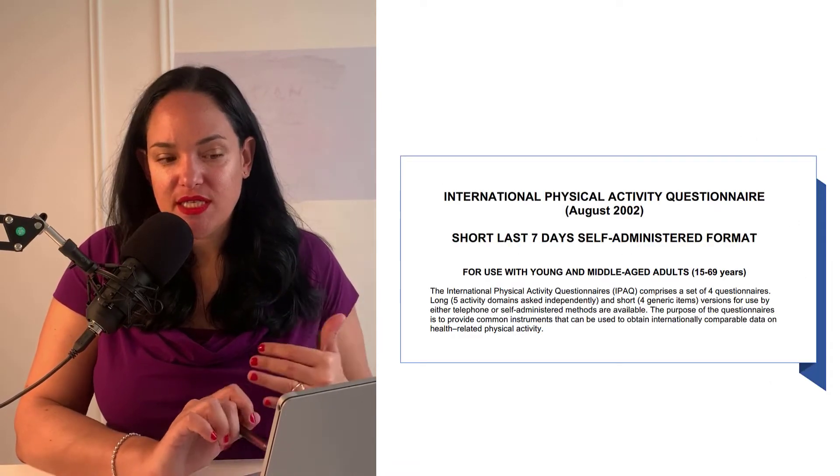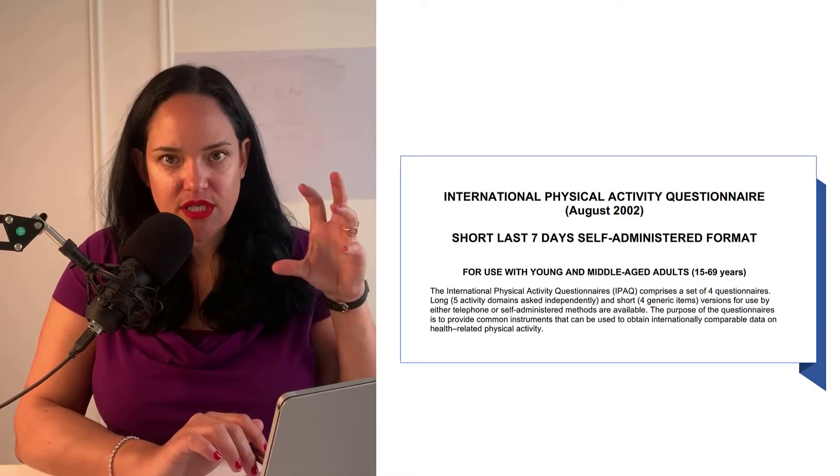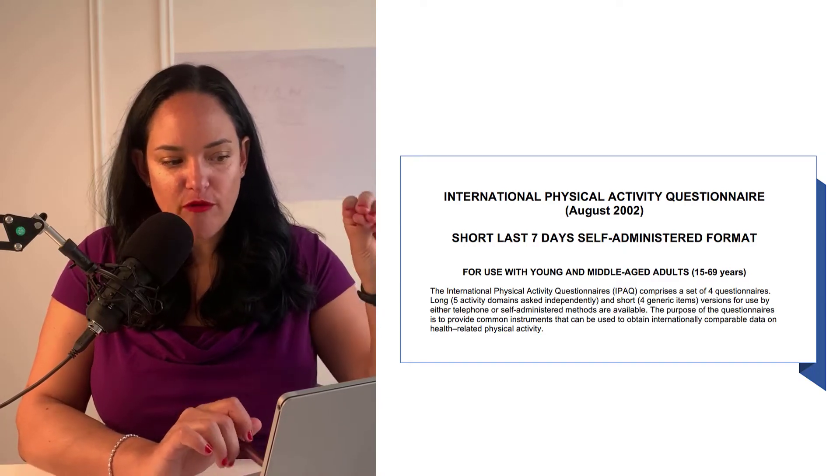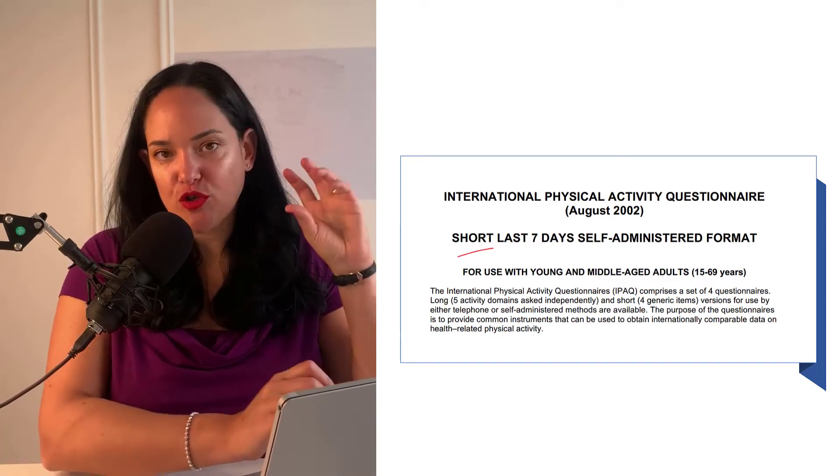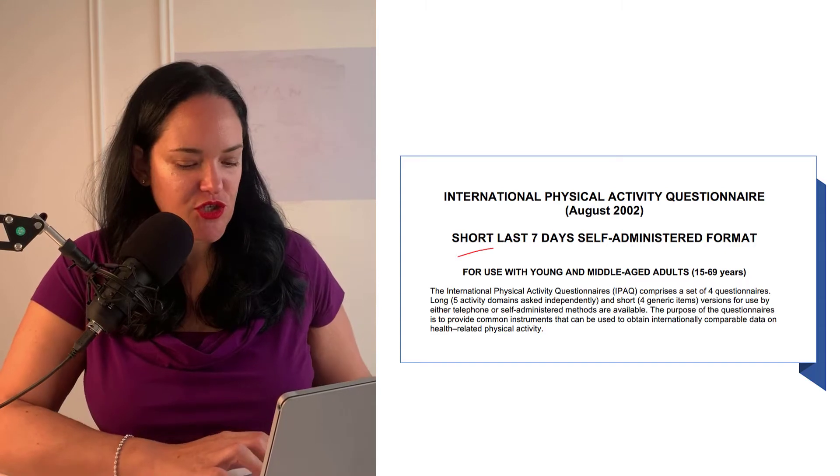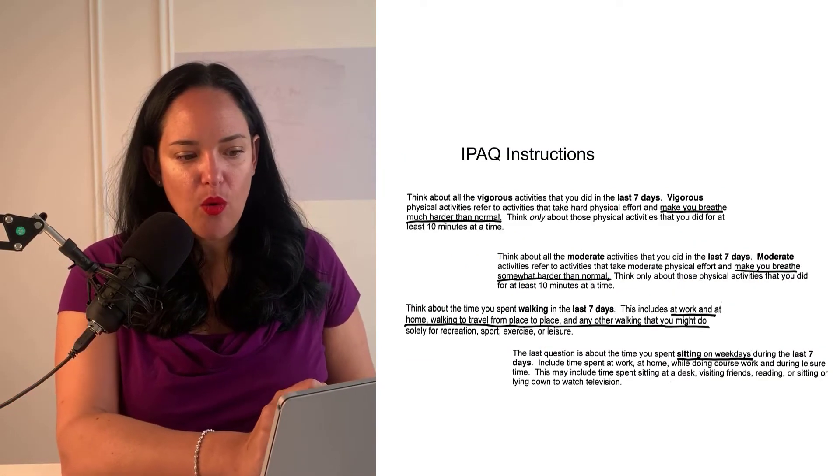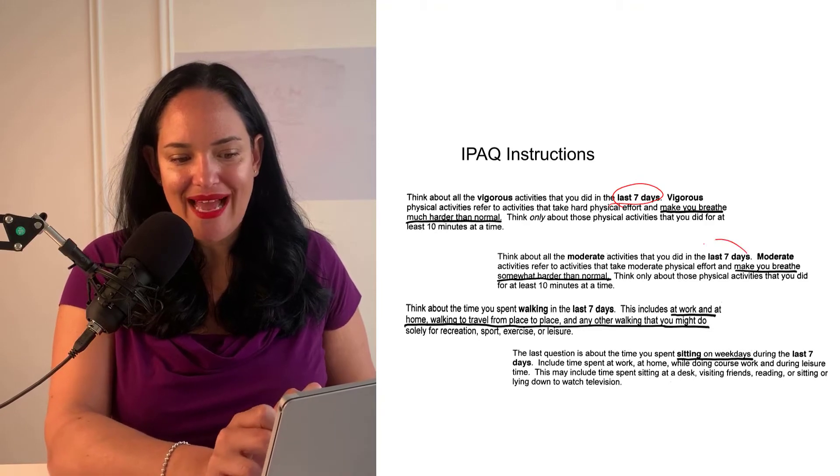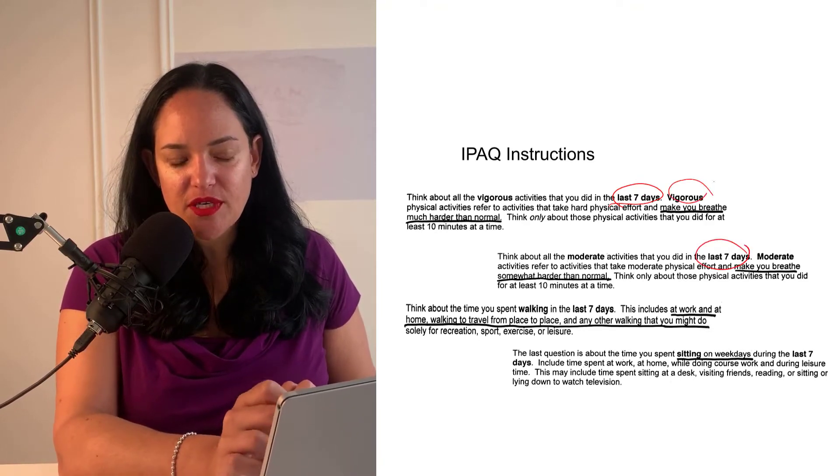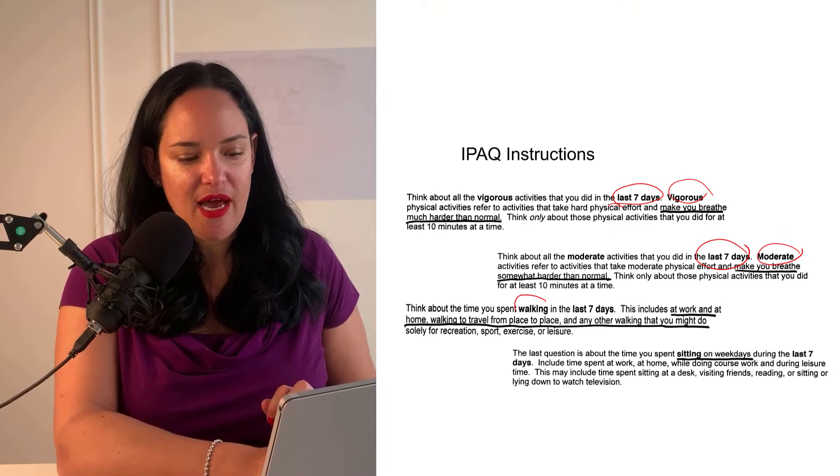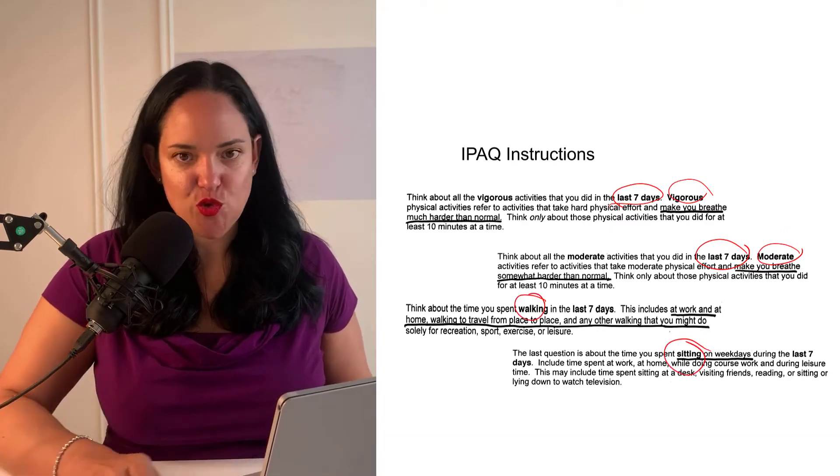So in your readings this week, you're going to see samples of both the short form and there's also a long form of this questionnaire. And this questionnaire asks questions about what people did in the last seven days, how much vigorous exercise they did, moderate exercise, and how much walking and sitting they did as well.